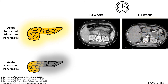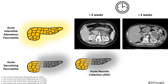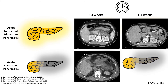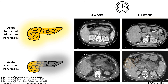In necrotizing pancreatitis, if less than four weeks, the collection is an acute necrotic collection. Similar to peripancreatic fluid collections, this necrosis is not walled off, and the goal is to wait at least four weeks to allow the collection to mature and demarcate and become walled-off pancreatic necrosis — a heterogeneous collection of liquid and non-liquid density that is well defined.